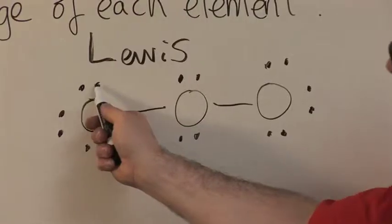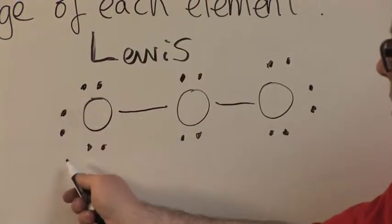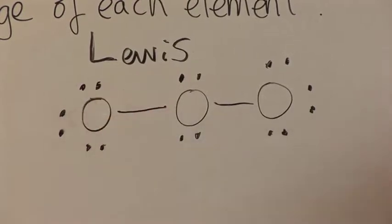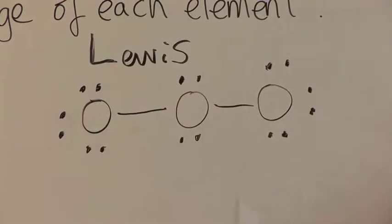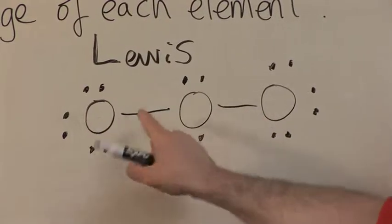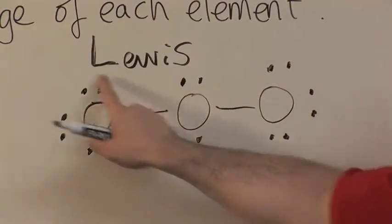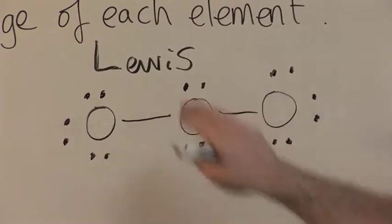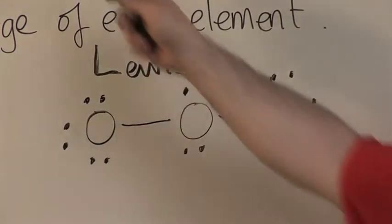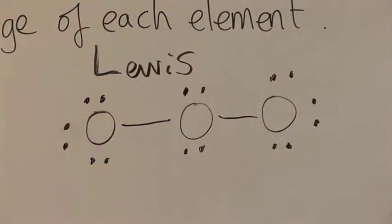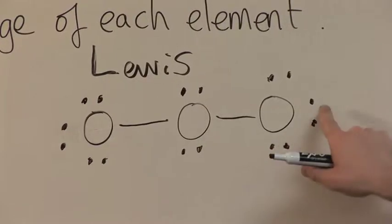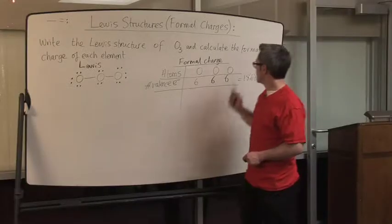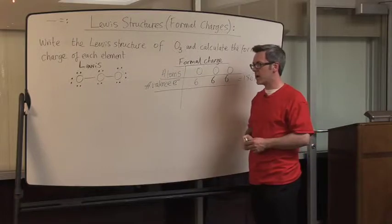So if I count them, I have two, four, six electrons around this oxygen. Seven, eight, remember the line represents two electrons, so I have eight total, plus two is 10, plus two is 12, plus another line is 14, 16, 18, 20. So I can only have 18 electrons, so I've added two too many.